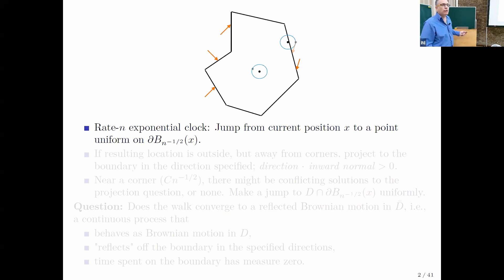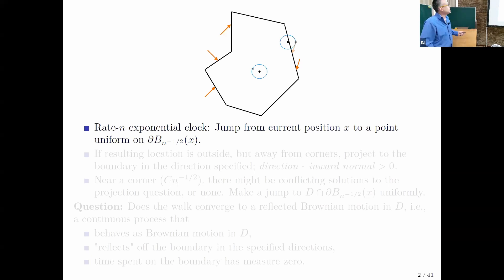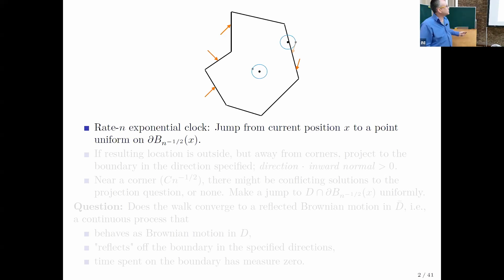It is driven by a rate-n exponential clock. Whenever the clock rings, it makes a jump: it first chooses uniformly at random a direction in which to jump, and then it makes a jump of size 1 over square root n. So this is diffusive scaling.